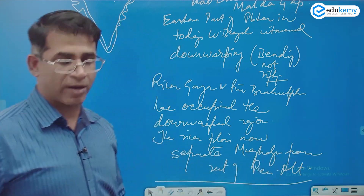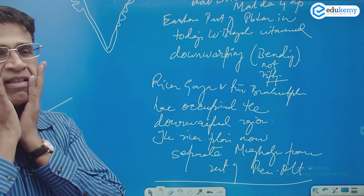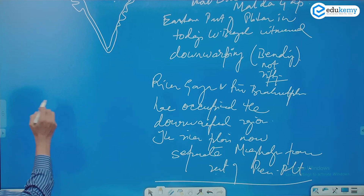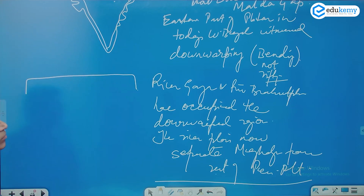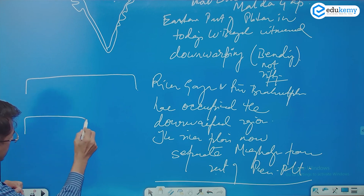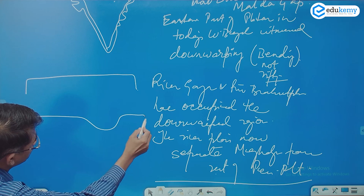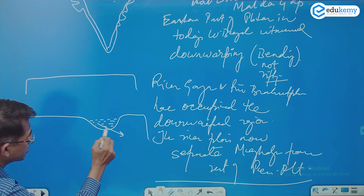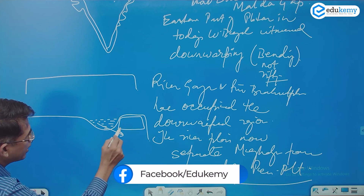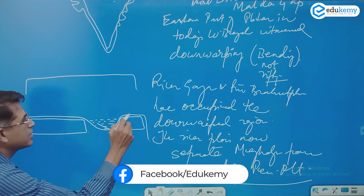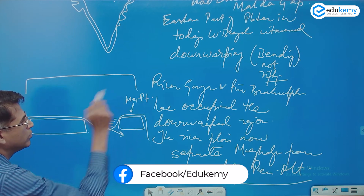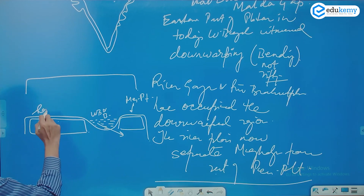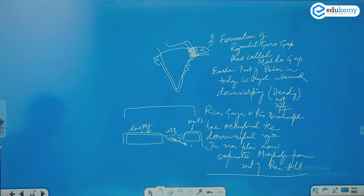If I draw this in a vertical cross-section: imagine this was the large plateau. For whatever reason it underwent down warping, a river is now flowing there, it has been covered by alluvial deposits, and therefore this part — the Meghalaya plateau — is now separated from the rest of the plateau. This part is West Bengal and Bangladesh.